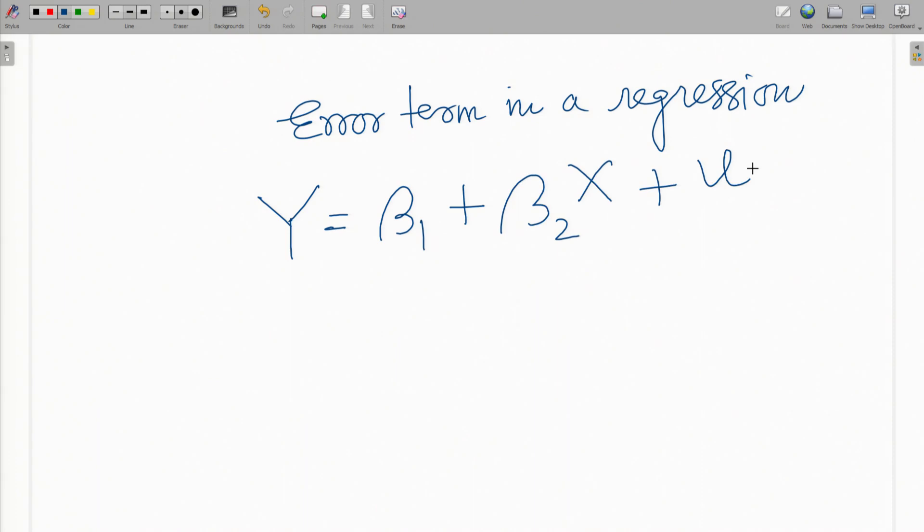This error term is something that is very important for a regression equation. We need to find ways to identify where the error is coming from and of course, we build up different tools and techniques to reduce the error term.